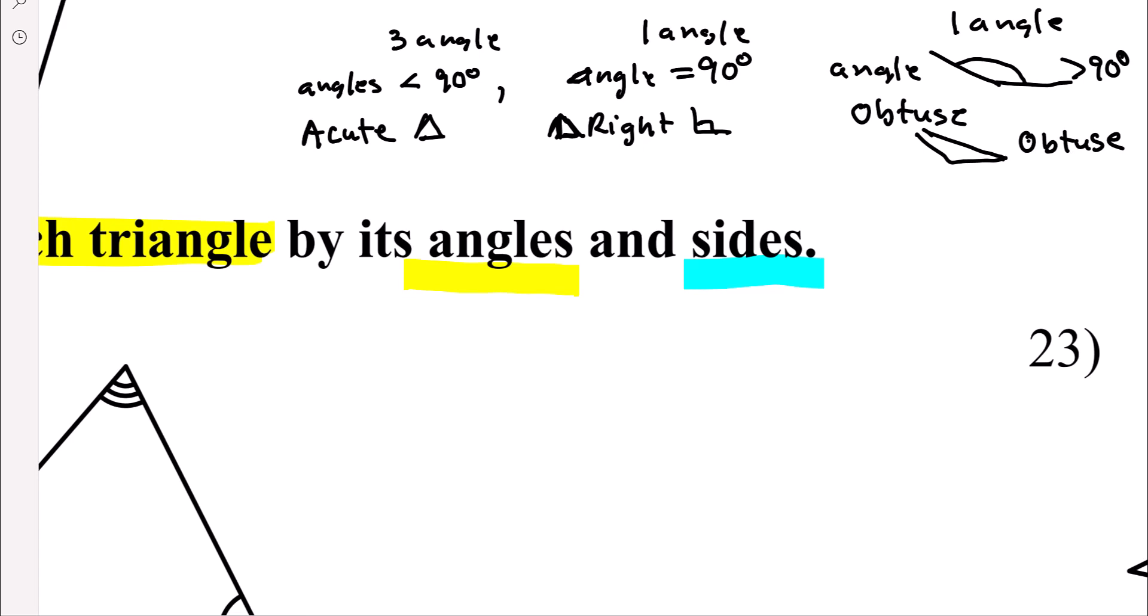Now let's shift and focus on our sides. So there's three possibilities. If all three sides are the same, and you indicate that by one tick mark, by the way, that means all of the angles are the same, this is called equilateral. And all three sides are the same.